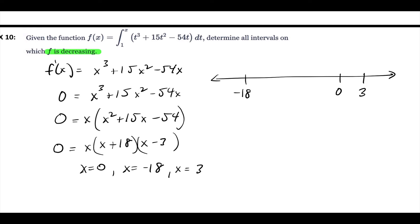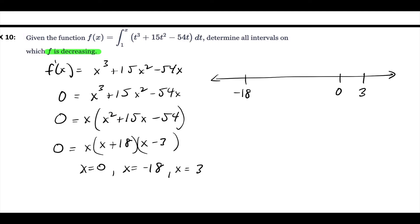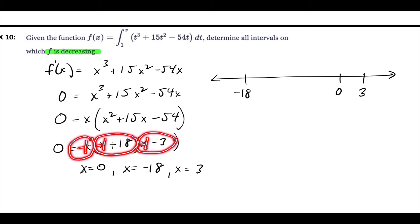Since these are non-calculator questions, the easiest approach is to plug into the factored form because it's just adding, subtracting, and multiplying. If I plug in negative one for the interval between negative 18 and zero: negative one gives a negative, positive, and negative from each factor. Negative times positive times negative makes a positive, so f prime is positive there.